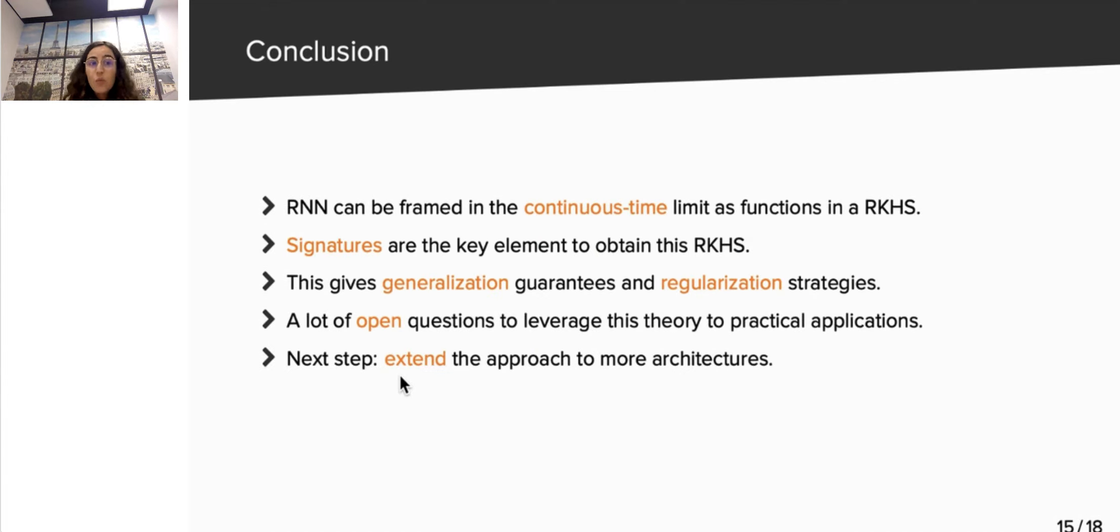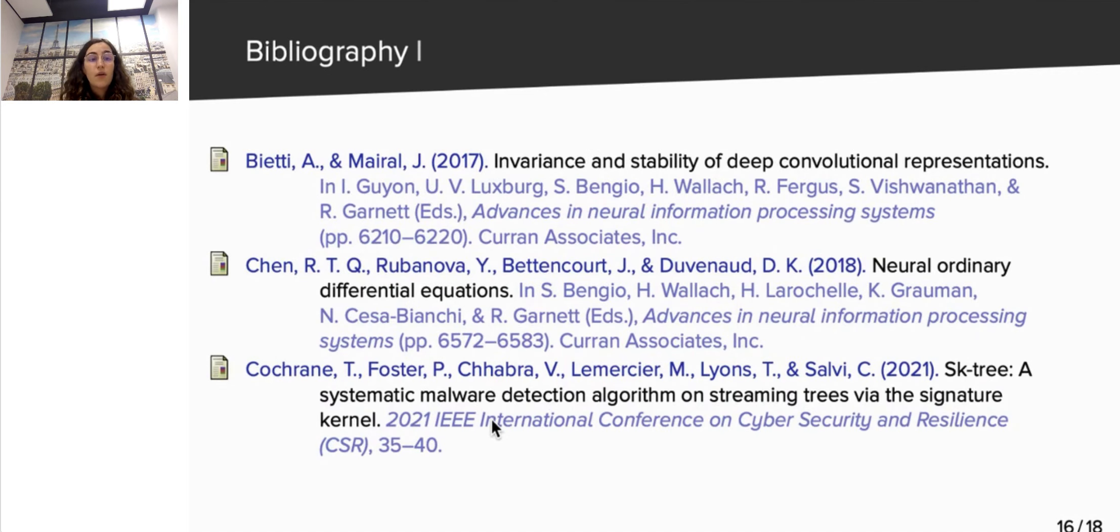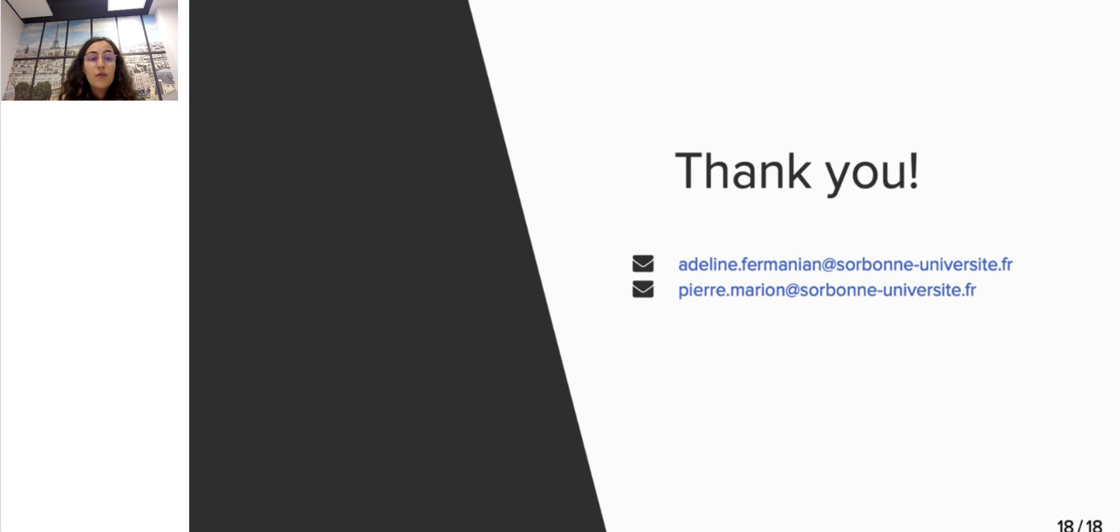To conclude, we have framed RNN as a kernel method in the continuous time limit. The key idea is to obtain this result using the neural ODE paradigm and the signature kernel. As a consequence, we obtained generalization and stability bounds. We refer to our paper for the generalization bounds obtained and for all the technical details. There is still a lot of remaining work to leverage this theory to practical applications, and we would be excited to hear suggestions from the community on this. The next step we are currently working on is to adapt the approach to other architectures, such as ResNet. You can find all the references in the slides. And we thank you very much for listening until the end of the talk. We'd be happy to answer your questions during Q&A, at the poster session, or by email. Thank you, and bye.